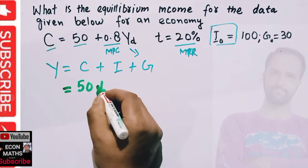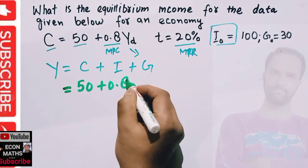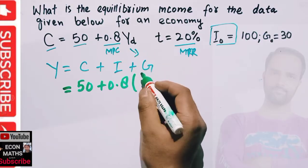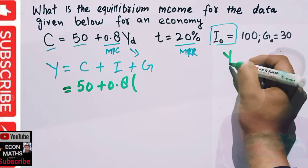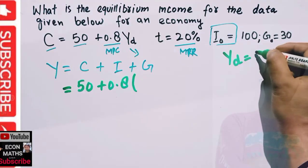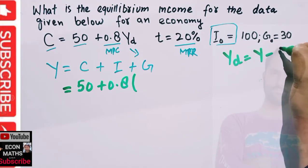Now Y_d (disposable income) - I can write Y_d as our total income minus the tax paid on this income. So in place of Y_d, I can write Y - tY.